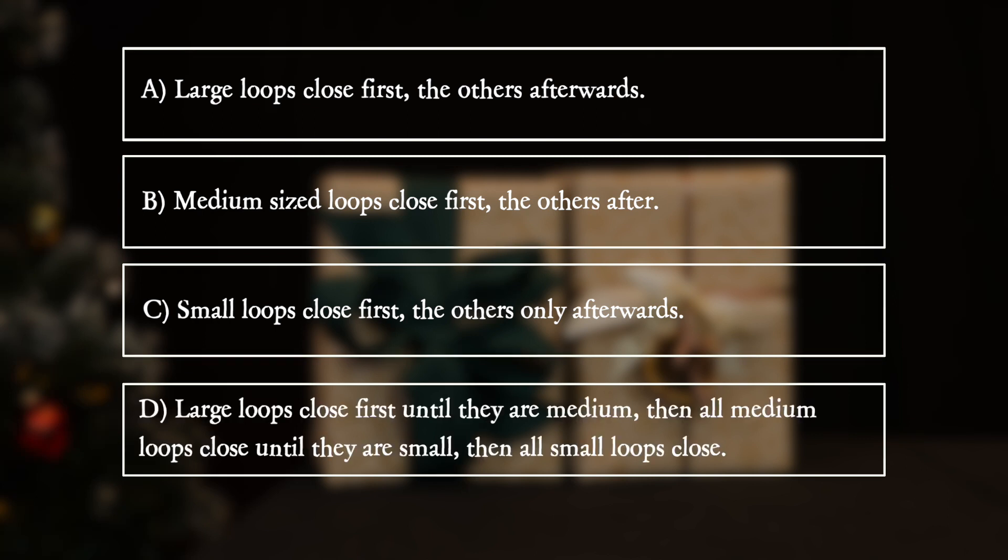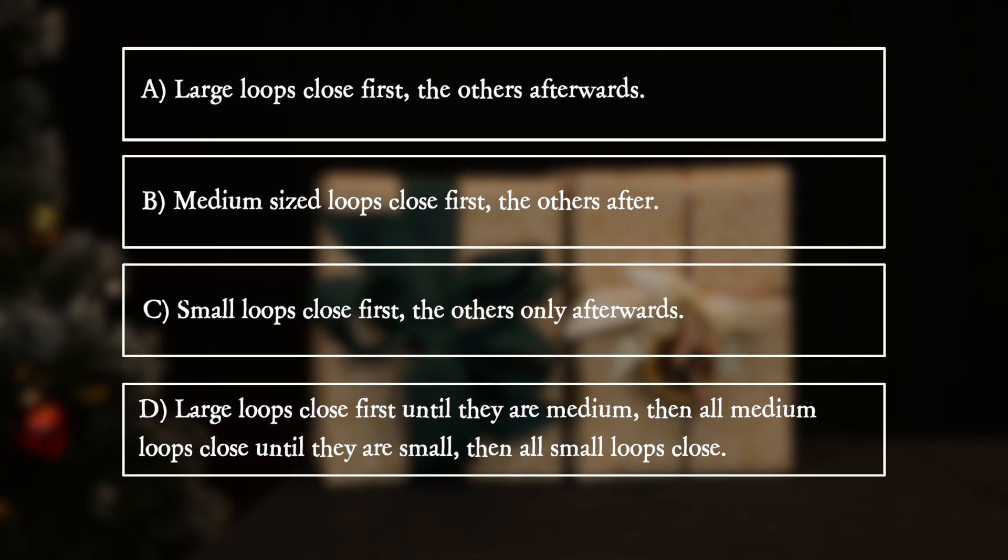D: Large loops close first until they are medium. Then all medium loops close until they are small. Then all small loops close.